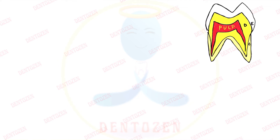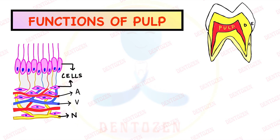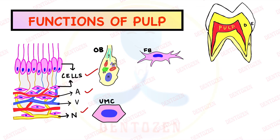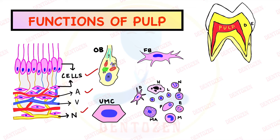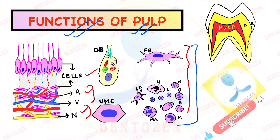Welcome to Dentocent. Today's topic is functions of pulp. To understand that, we need to look at the composition of pulp, which contains cells like odontoblasts, fibroblasts, undifferentiated mesenchymal cells, blood vessels, and nerves. All these components are present to serve specific functions, so if you can remember the composition of pulp, you can easily remember the functions of the pulp.